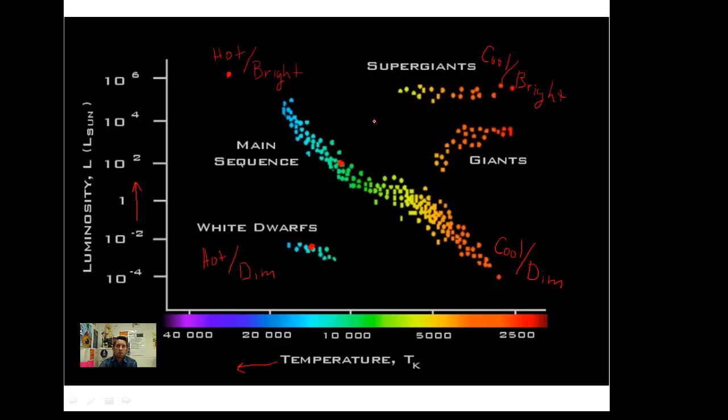Well, it tells us the age. It could tell us the age. White dwarfs are going to be older stars than main sequence stars. Main sequence are in their main adulthood. Giants are going to be older. Supergiants, older as well. So it tells us temperature, it tells us brightness, it tells us size, and it tells us age. There's a lot going on here. So hopefully we've got that.